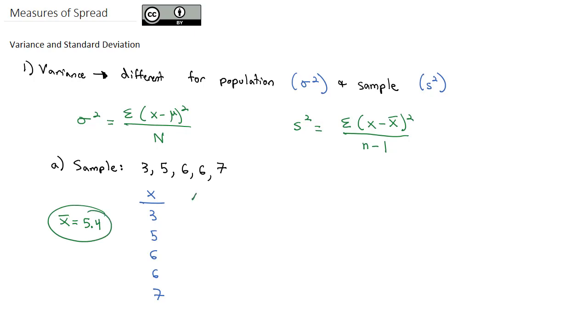I'm going to make another column where I'm going to take all of those x values, and notice in parentheses, the formula says we take each of those x values and we subtract the mean x̄. So we take 3 and subtract the 5.4 and we get negative 2.4. 5 minus 5.4 is negative 0.4. 6 minus 5.4 is positive 0.6, again, 6 minus 5.4 is 0.6, and 7 minus 5.4 is 1.6.